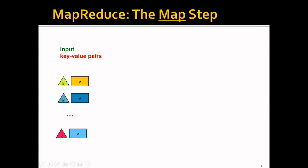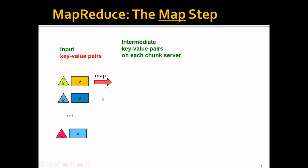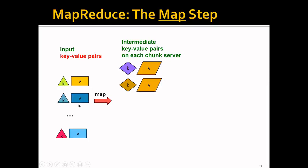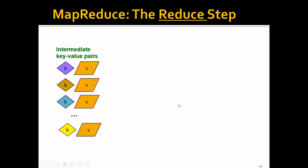More concretely, MapReduce takes as input some key-value pairs. For example, in the warm-up task, one key-value pair can have the key be the document ID and the value be all the text in the document. We perform a Map function to produce some intermediate key-value pairs on each chunk server, and do the same for different key-value pairs as input, and so on. Once we get all these intermediate key-value pairs, we come to the Reduce step.